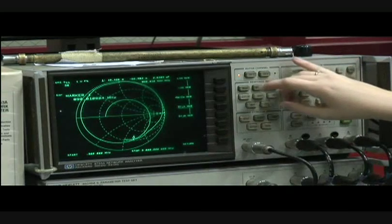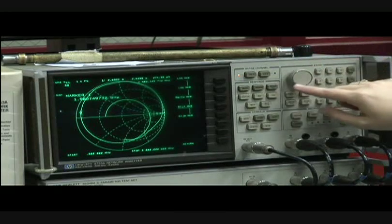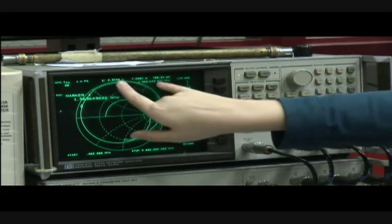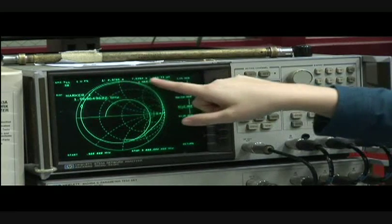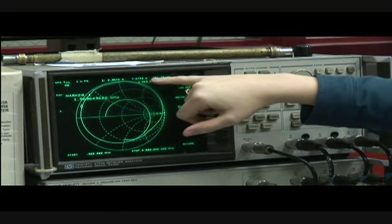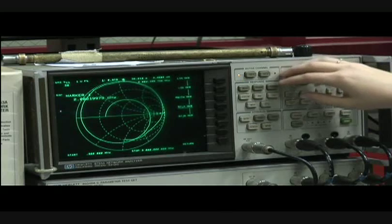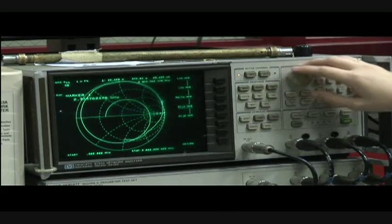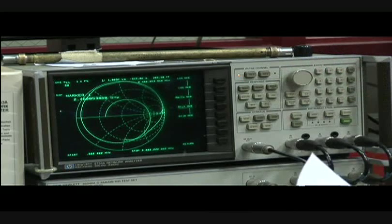And you can move along this chart with this knob here and the first reading here is the real resistance and the second reading is the imaginary impedance. So you can move along here and look for whatever values it is that you're looking for.